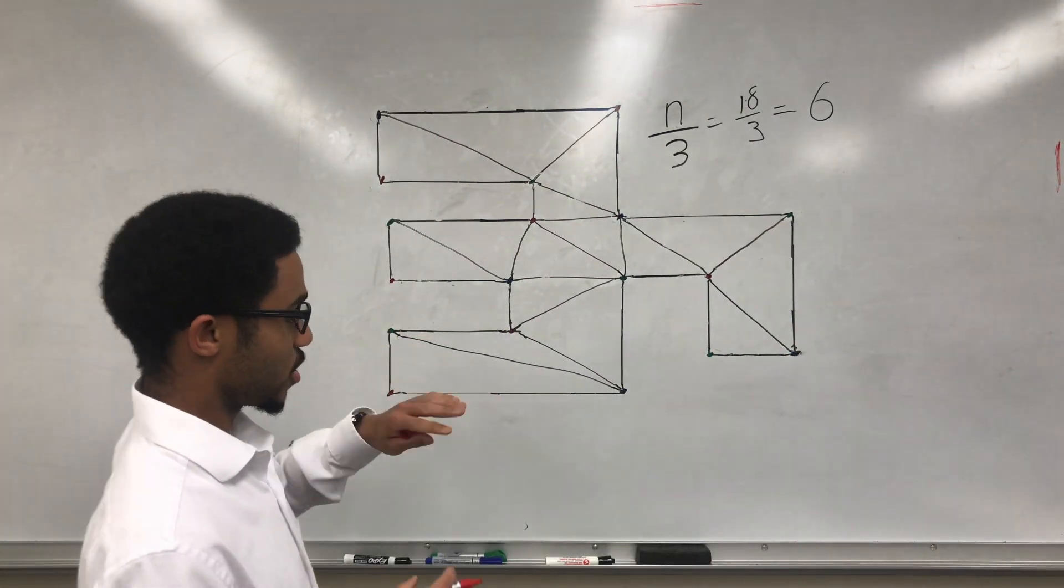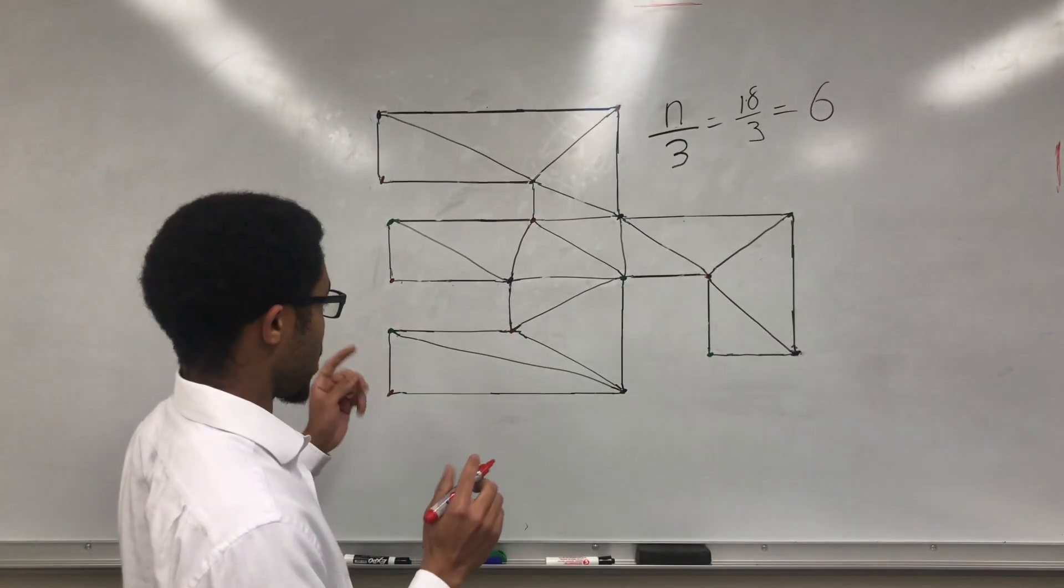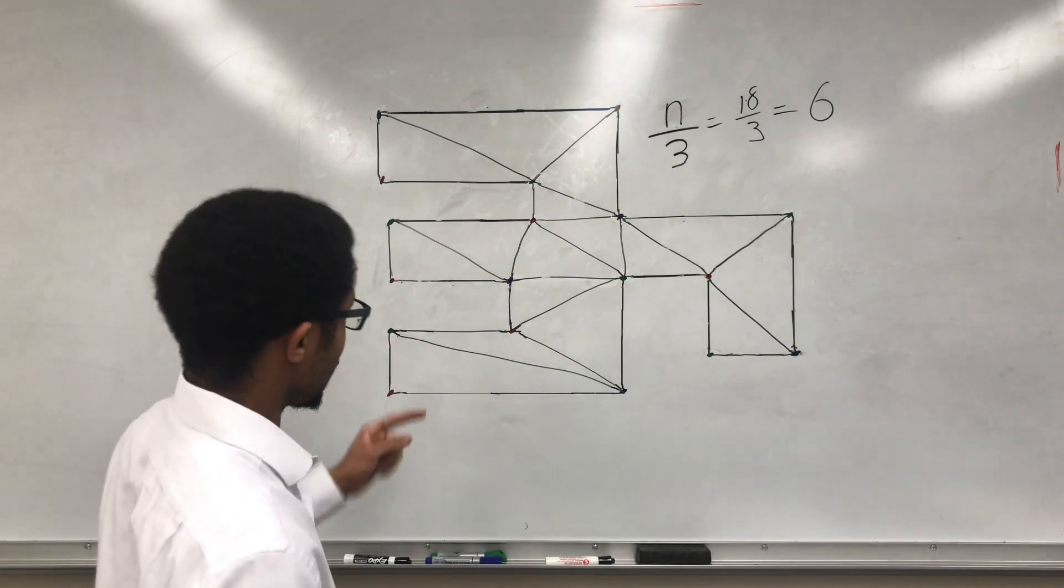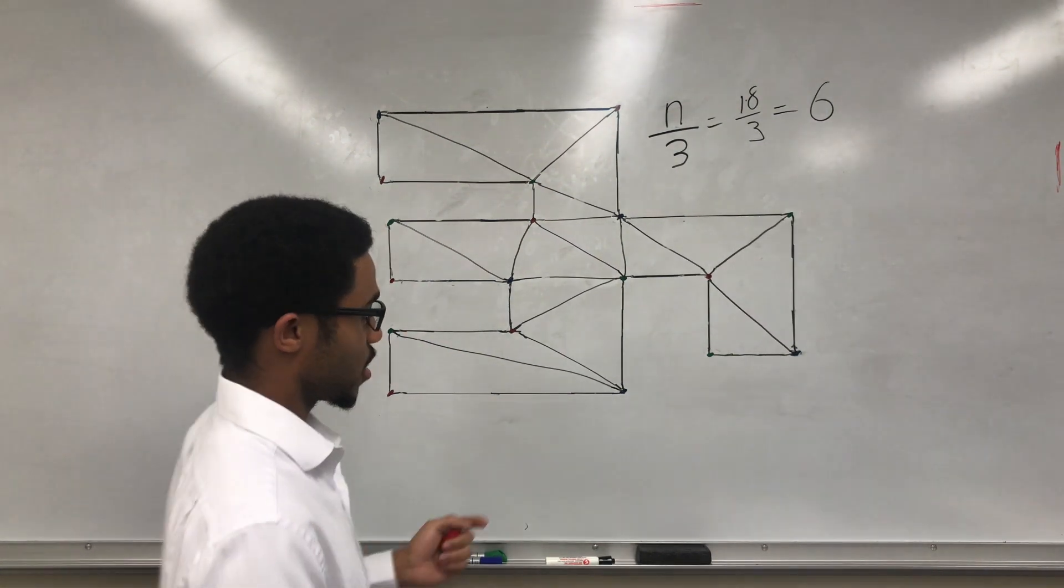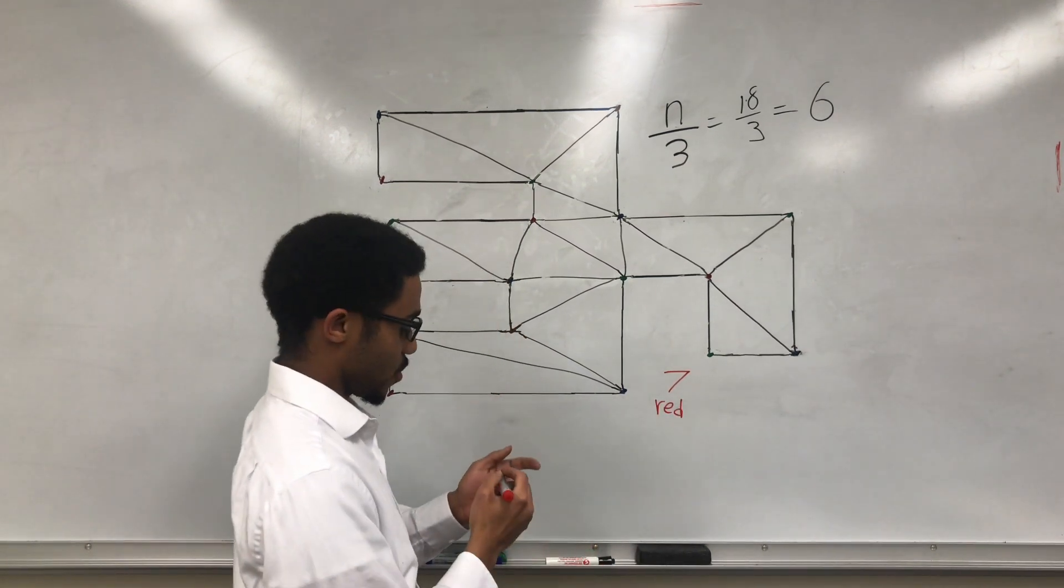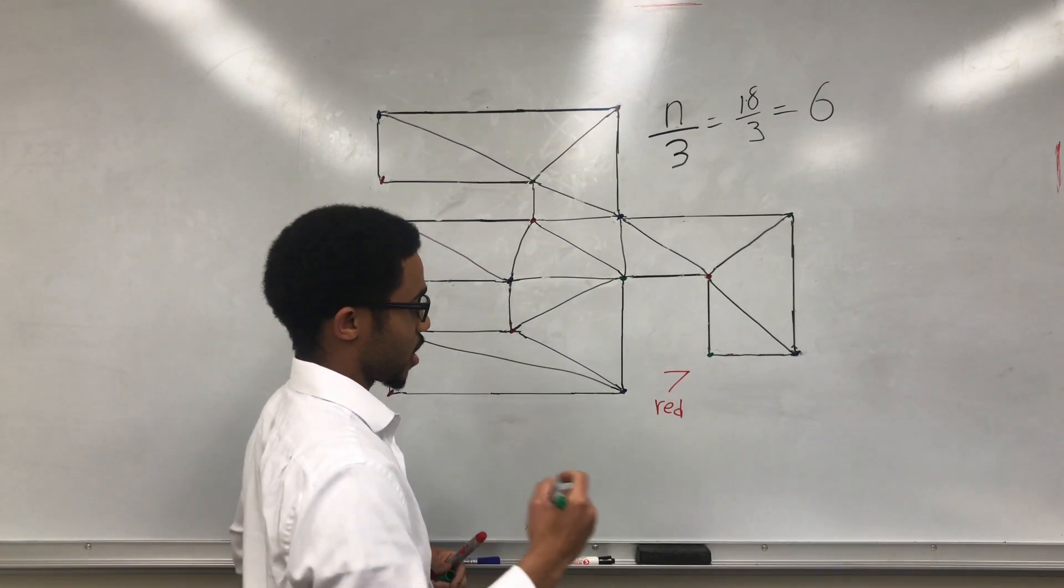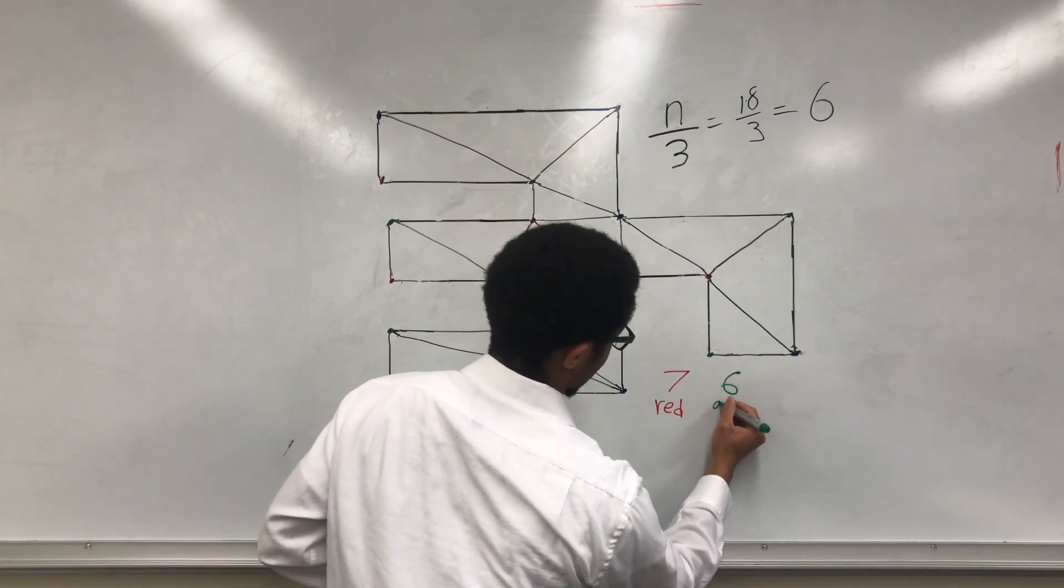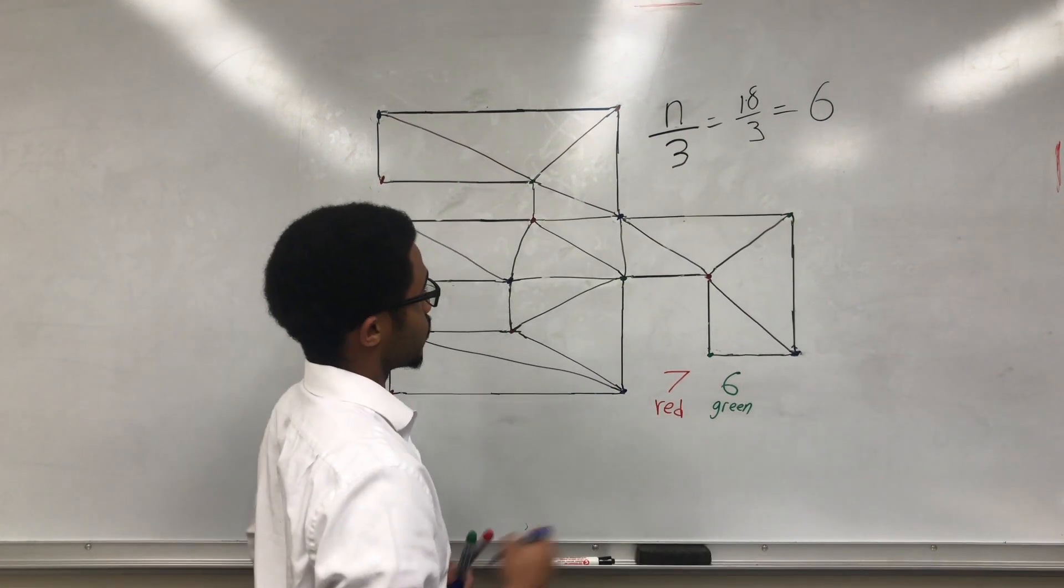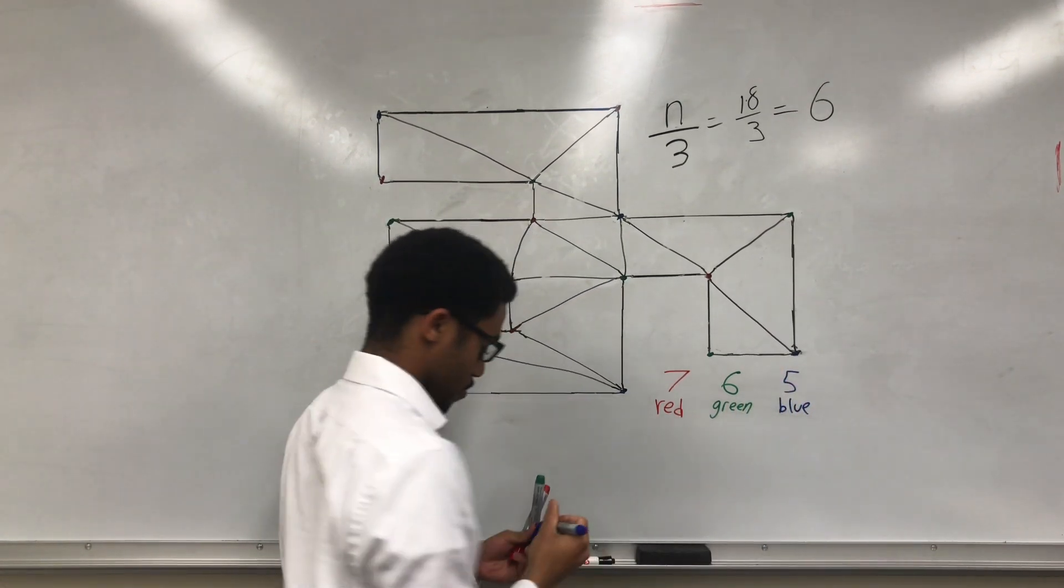After the whole polygon is divided, we can look at the shape and count up the number of vertices for each color we used. Let's start with the red. If we count up all the red vertices, we'll see that we have 7 red vertices. And for green, if we count it up, we'll see that we have 6 green. And for blue, we have 5 blue vertices.